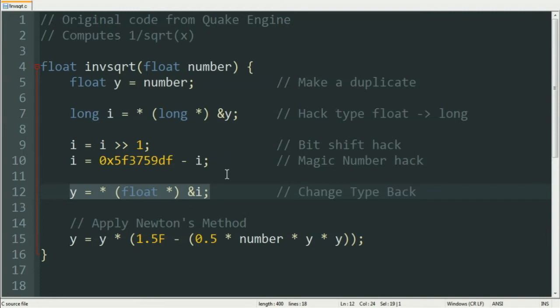Now the number we have here is considered a fair approximation, but what the original creators of this have done is they've taken this one step further by applying Newton's method. This is a mathematical method to make your approximation just a little bit better, and yeah, that's what they've done in this context.